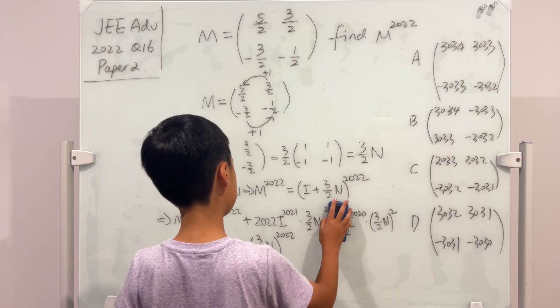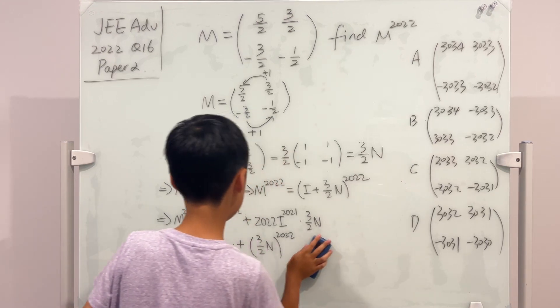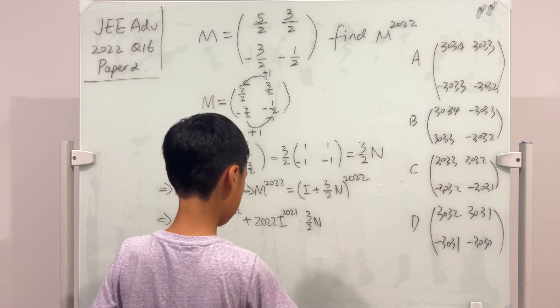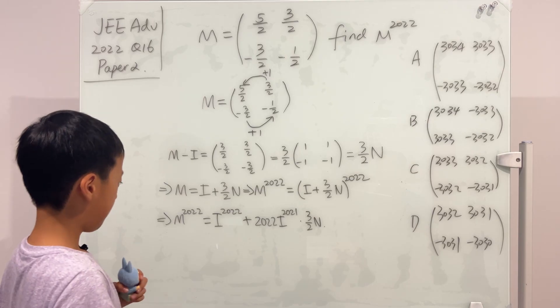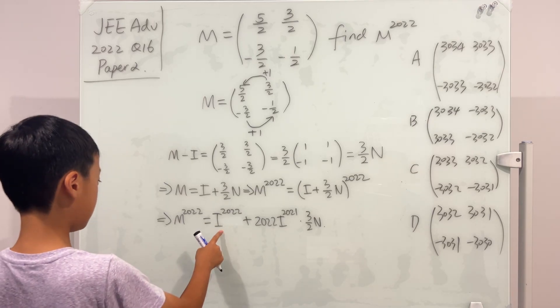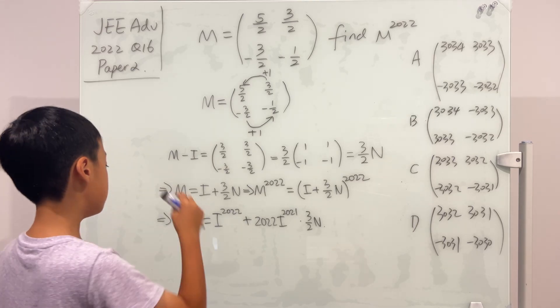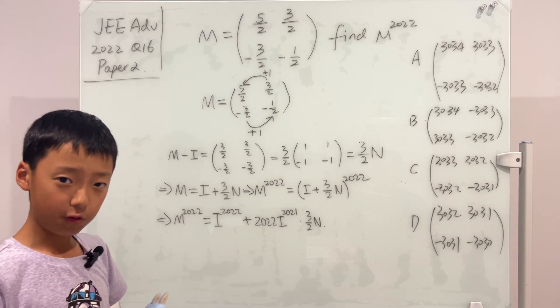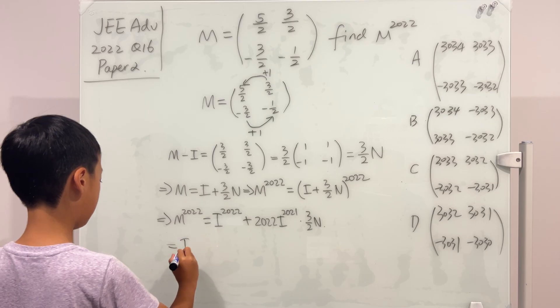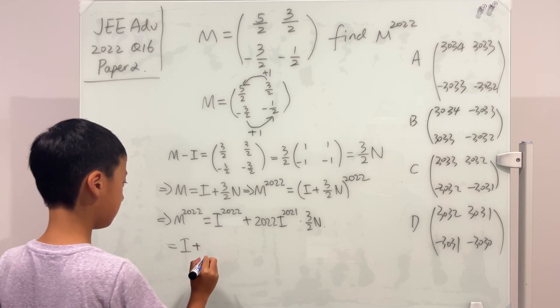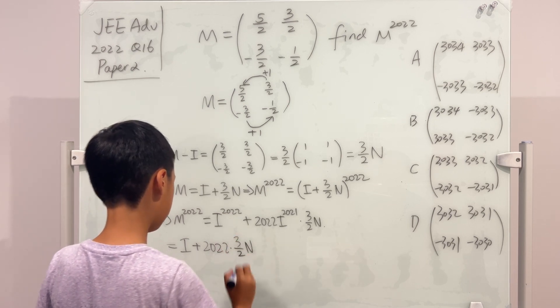So we can just rub them out, right? Now, this I, or the identity matrix we call, raised to the power of anything will be itself. So this is still equal to I, and then plus 2022 multiplied by 3 over 2N. Okay?